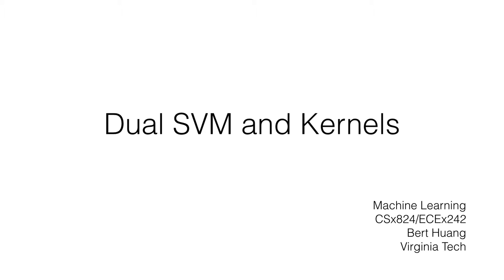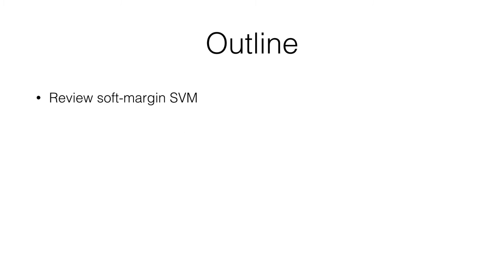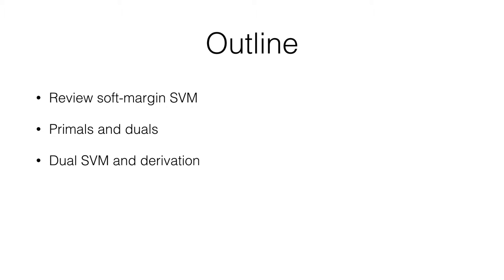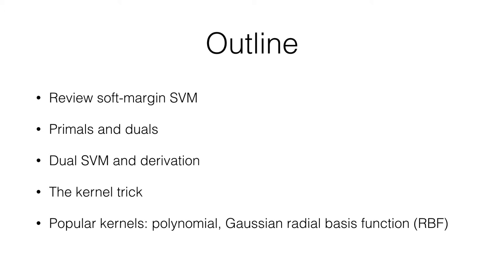In this video, we're going to take a different view of the support vector machine — the dual view — and introduce the kernel trick. The outline is: we'll briefly review the soft margin SVM from the last video, talk at a high level about primals and duals in optimization, then derive the dual SVM. I'll introduce the kernel trick and some popular kernels — the polynomial kernel and the Gaussian radial basis function (RBF) kernel — and next time we'll talk about how to compute these.